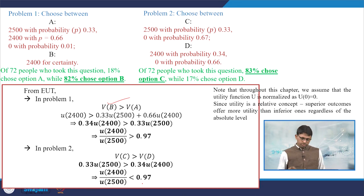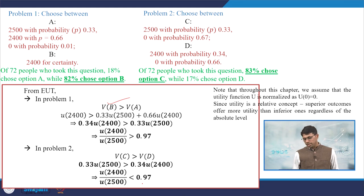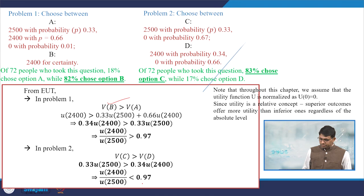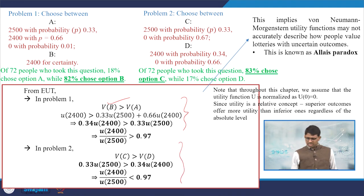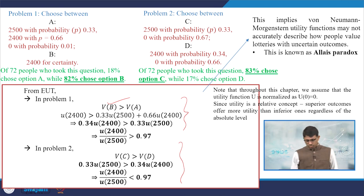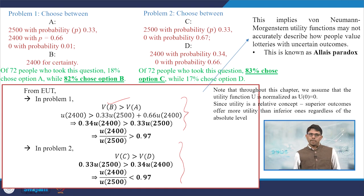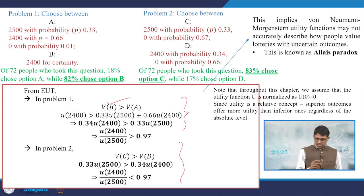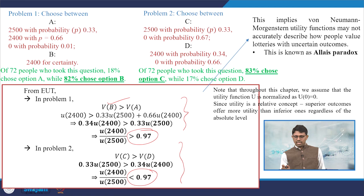We need to note that throughout this chapter the utility function is normalized, otherwise it is difficult to compare different contexts. Since utility is a relative concept, superior outcomes offer more utility than inferior ones regardless of their absolute level. From this example we have seen that the expected utility function may not accurately describe how people value lotteries with uncertain outcomes. With uncertain outcomes people are actually highly confused and their preferences do not signal how in general context the reverse preference was taken. This is precisely called the Allais paradox.